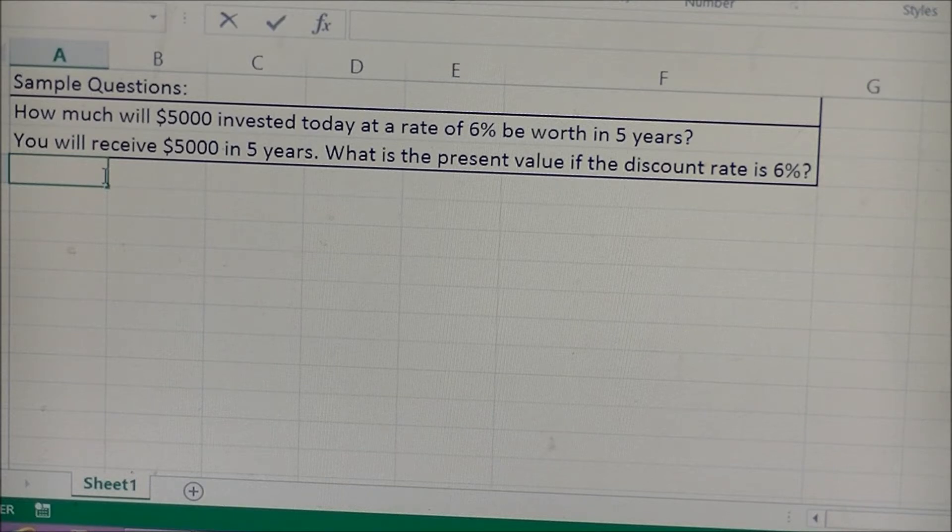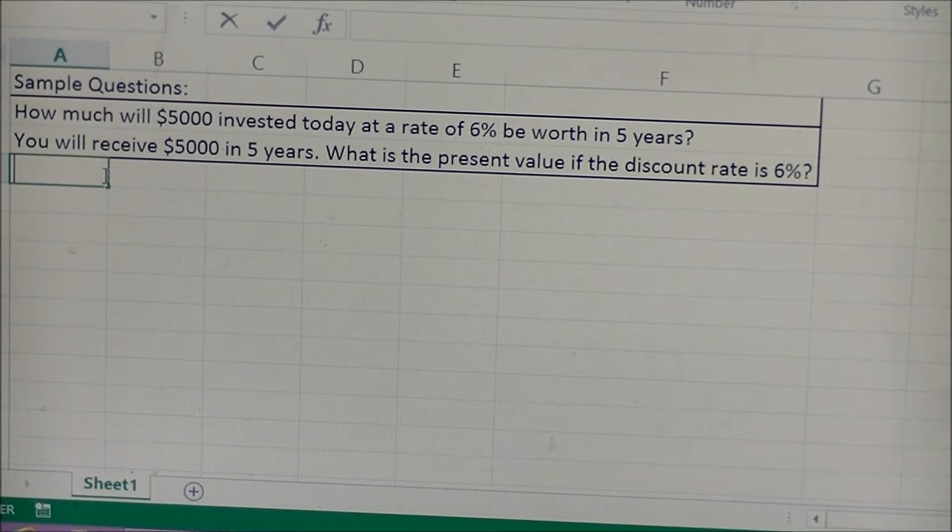The first problem we're going to solve will be how much will $5,000 invested today at a rate of 6% be worth in 5 years. So we're trying to find out a value that's going to be in the future, which is going to be 5 years, so obviously we know this is going to be a future value problem.